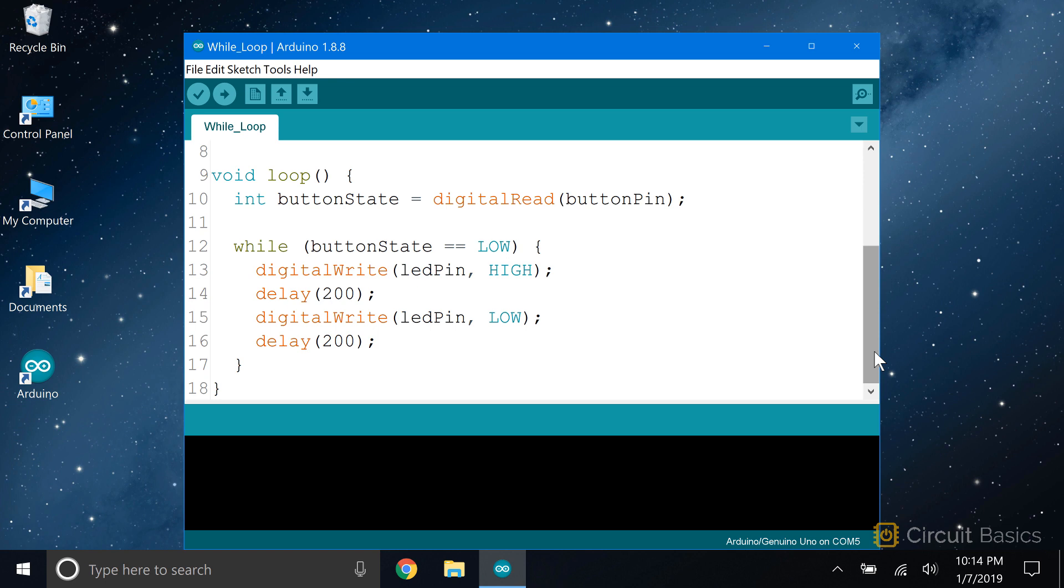In the loop section, I have a variable called buttonState, which holds the digital read value from the button pin. Now we get to the while loop. It's kind of similar to an if statement. The condition goes inside the parentheses. Here I want the program to enter the while loop whenever the button is pressed, and stay looping as long as the button stays pressed.